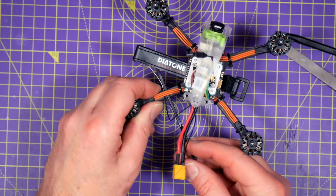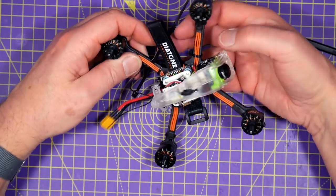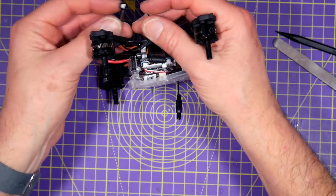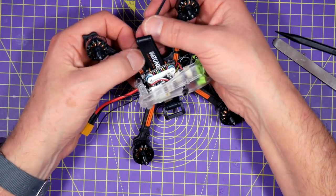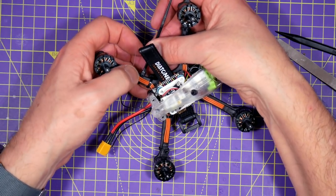You can decide which way you want to do this, but I'm feeding the antenna and the tie wrap between the motor wires and the frame, just secure it in place and the antenna will just sit along the top.